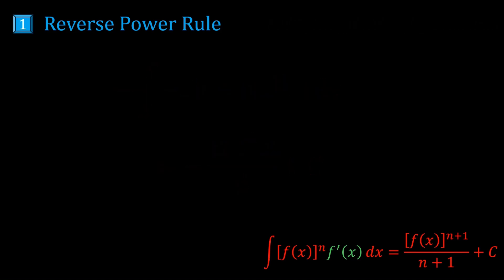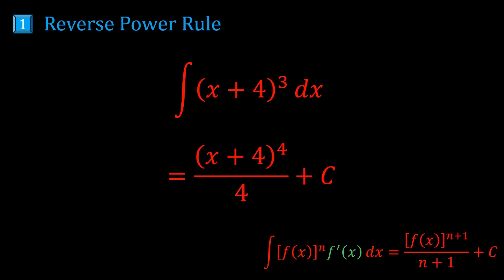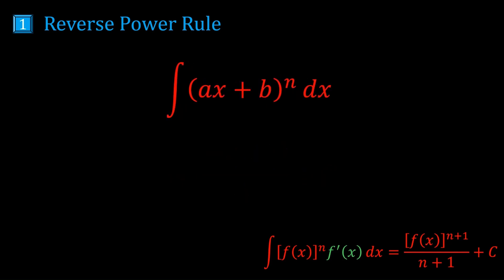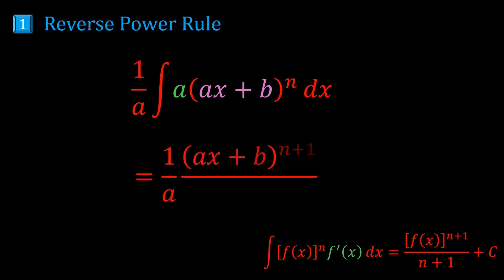Now an even easier example which some people still use u-sub for. We have (x+4) raised to some power, and the derivative of x+4 is 1 — that's perfect because f'(x) is just 1. It's already there. So the answer is (x+4)⁴ on 4 plus c. For the more general case with ax+b (where a and b are non-zero and n ≠ −1), we look at the derivative of the inner function ax+b, which is just a. We multiply and divide by a, giving the answer 1/a · (ax+b)^(n+1) on n+1.